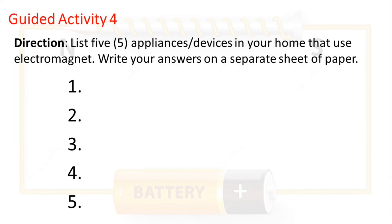Guided Activity 4. List 5 appliances or devices in your home that use an electromagnet. Write your answers on a separate sheet of paper.